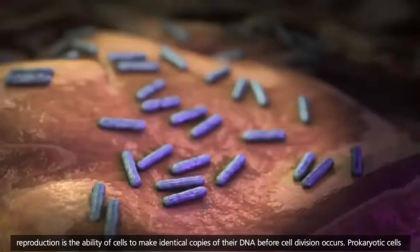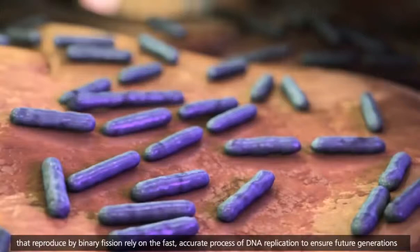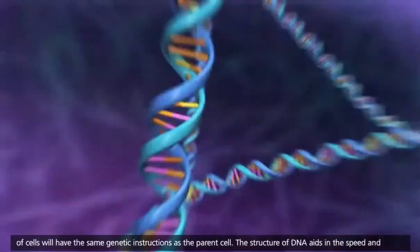Prokaryotic cells that reproduce by binary fission rely on the fast, accurate process of DNA replication to ensure future generations of cells will have the same genetic instructions as the parent cell.